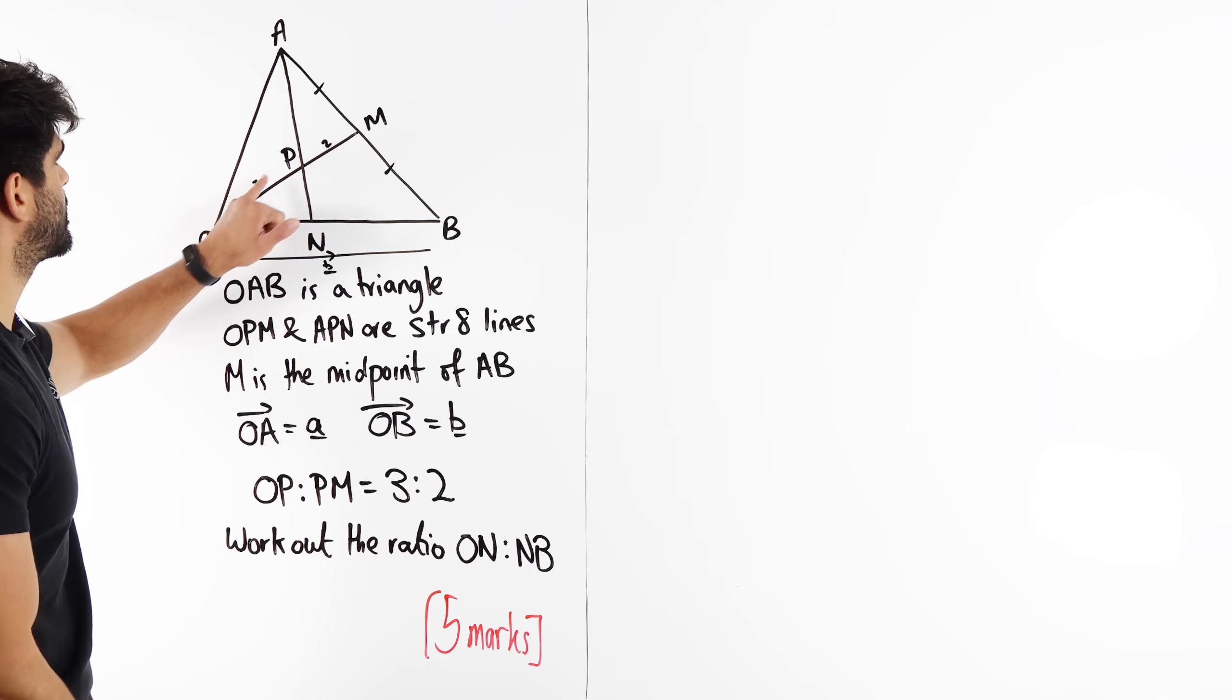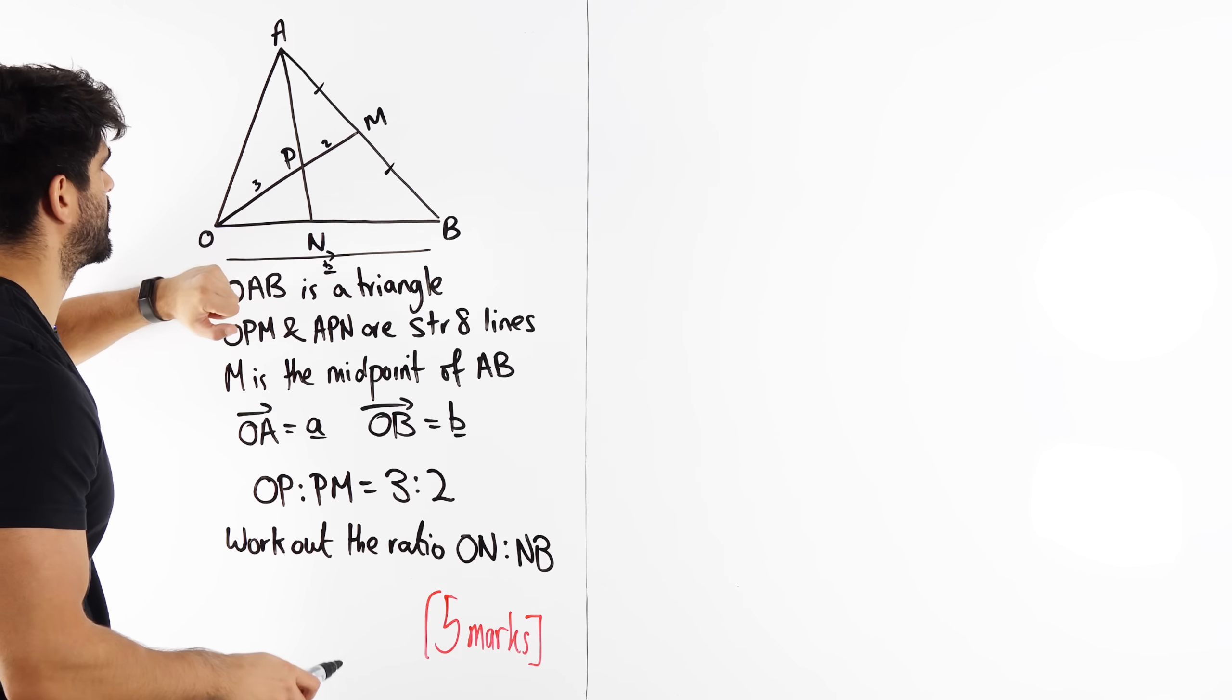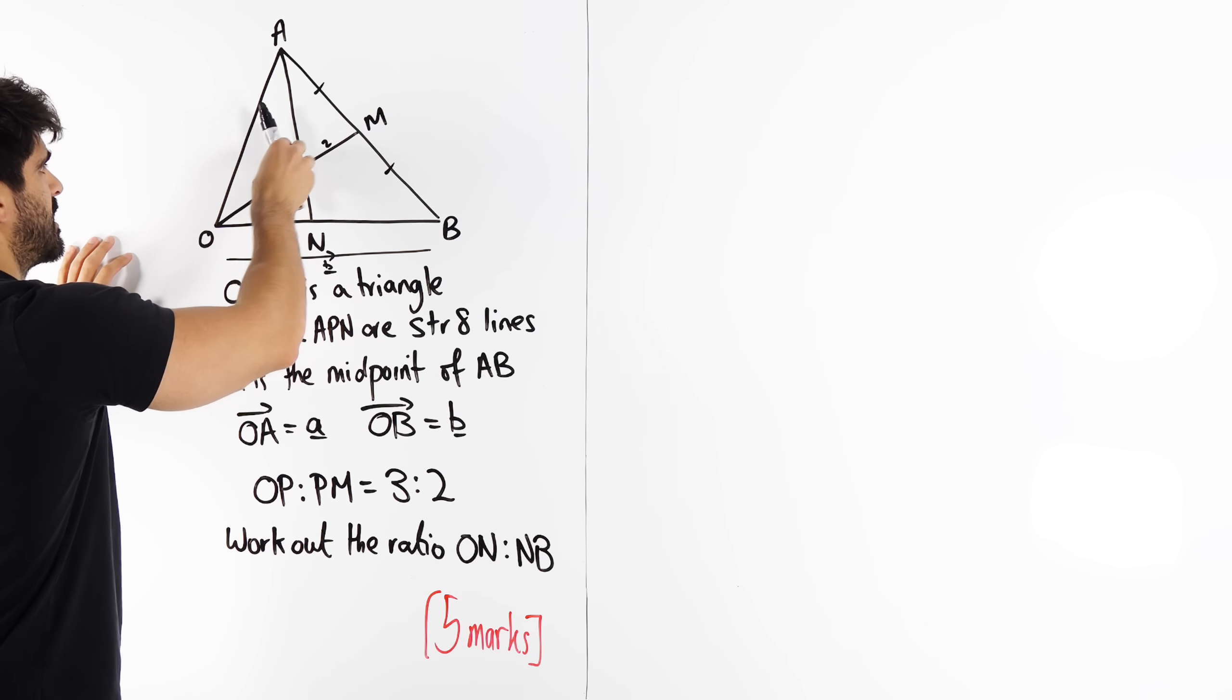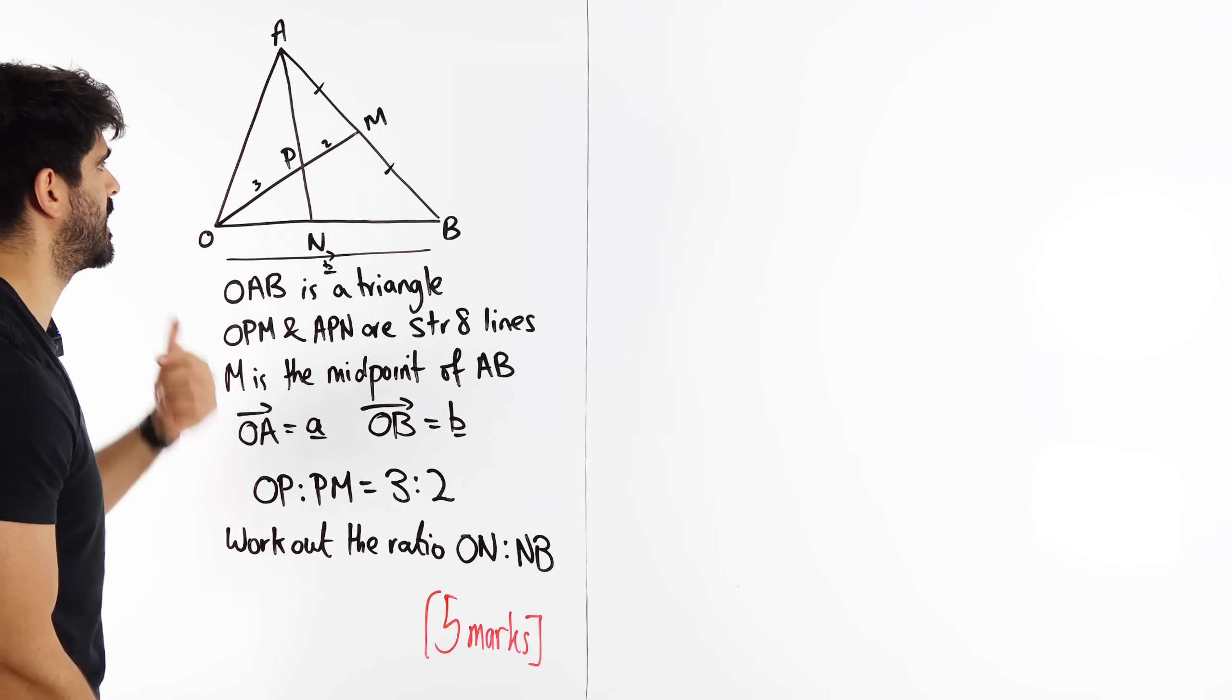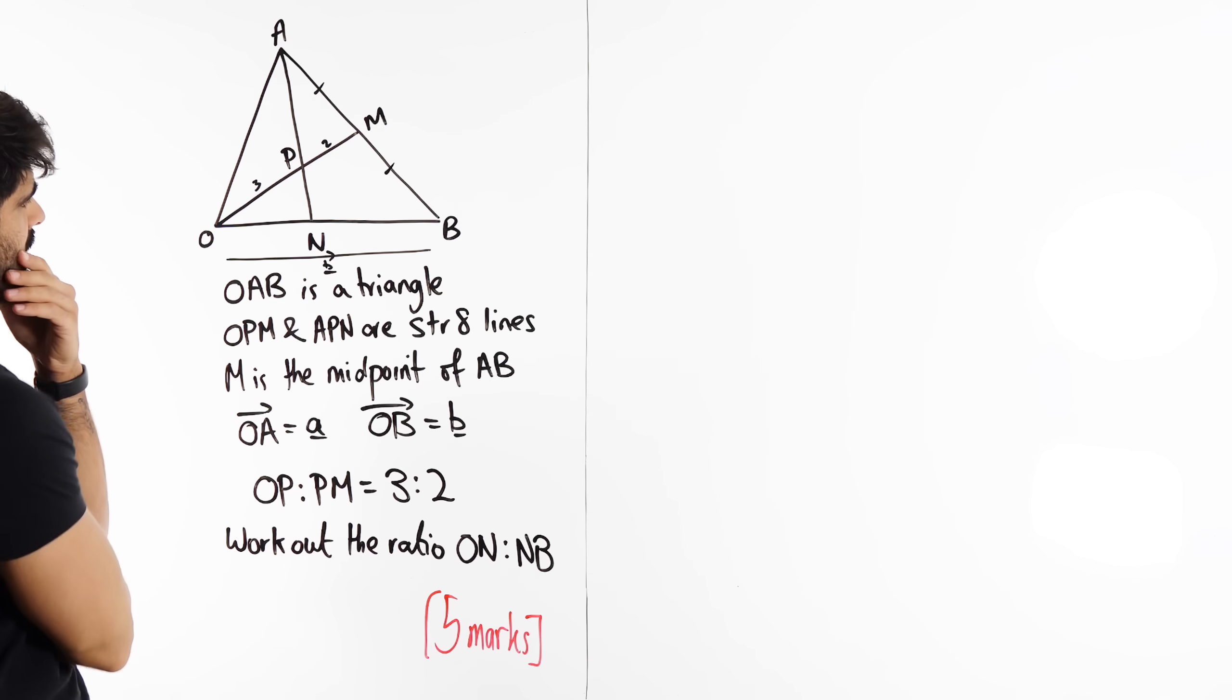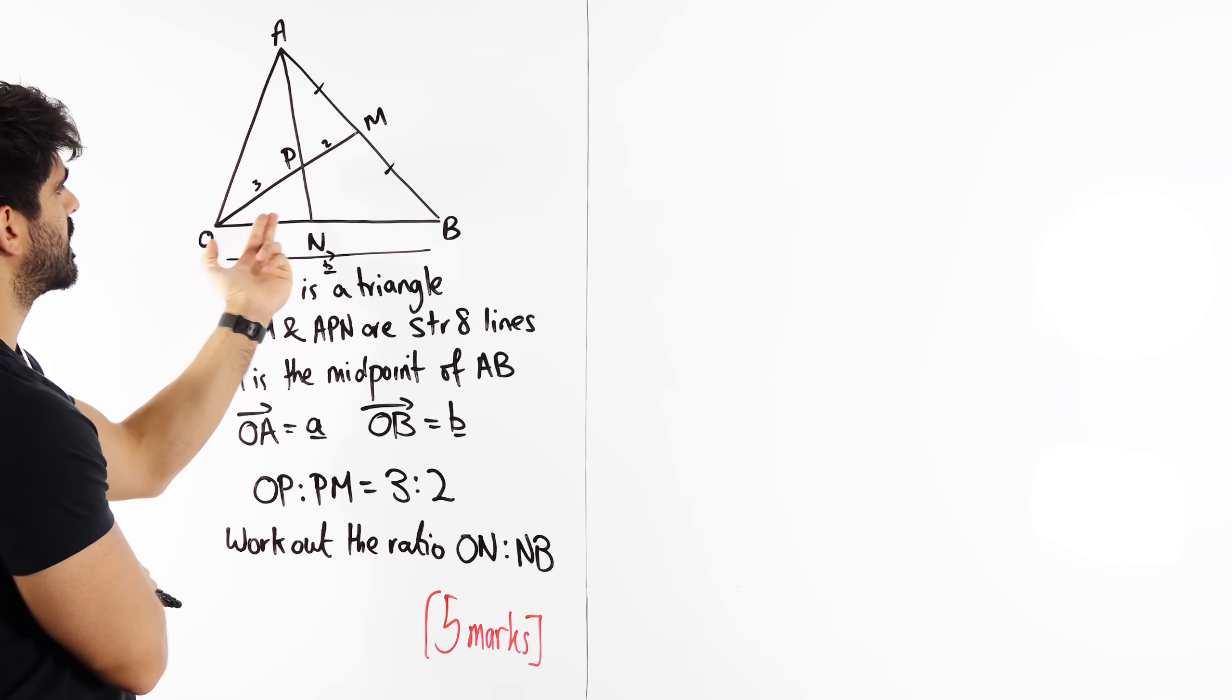Now remember, if this ratio here changed, this intersection here, then that will determine where N goes because obviously you can rotate that. They've said let's fix it so that it's 3 to 2. If that was 1:1, then N would be in a different position. So, how do we find the ratio that N breaks up this line?